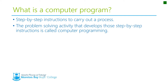Generally, a computer program is a set of step-by-step instructions to carry out a particular process. The actual process of computer programming is the problem-solving activity that develops those step-by-step instructions. Now, computers are dumb — they're not very smart at all — so we need to be quite specific in the instructions that we give, and that's a skill that we're going to learn over this term.